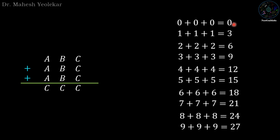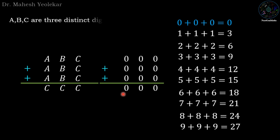We have digits 0 to 9. If we take 0 plus 0 plus 0 equals 0, then C equals 0 means B plus B plus B equals 0 and A plus A plus A equals 0, which is only possible when A and B are also 0. But ABC are three distinct digits, so this option is not possible.